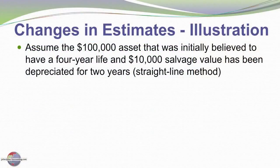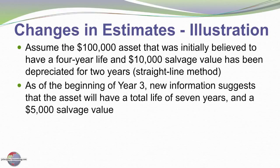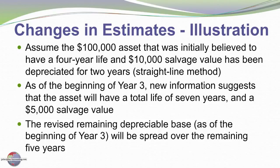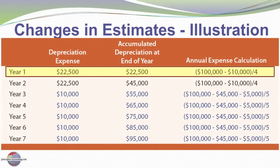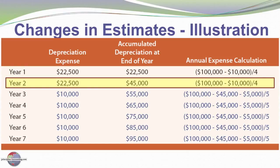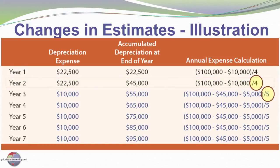By way of example, let's assume our $100,000 four-year lived asset with $10,000 salvage value has been depreciated for two years. At the beginning of the third year, new information suggests the asset will have a total life of seven years and a $5,000 salvage value. The revised remaining depreciable base should be spread over the revised remaining useful life. In year three we're changing from a four-year life to a seven-year life, and from a $10,000 salvage value to a $5,000 salvage value.